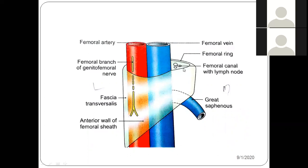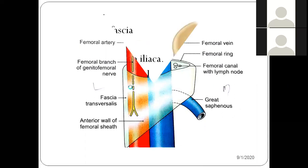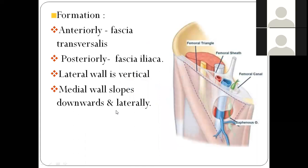It contains a lymph node. So: the intermediate compartment is the femoral vein, and the lateral compartment is the femoral artery, with the femoral branch of the genitofemoral nerve. The femoral sheath is formed anteriorly by fascia transversalis and posteriorly by fascia iliaca.